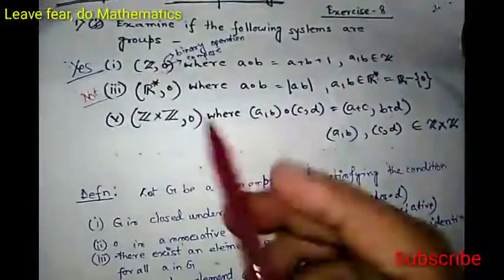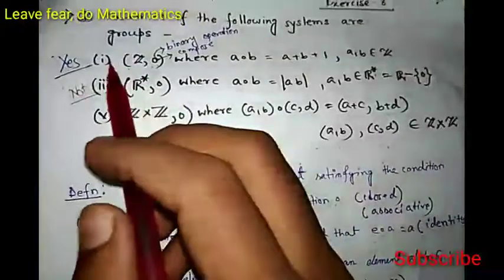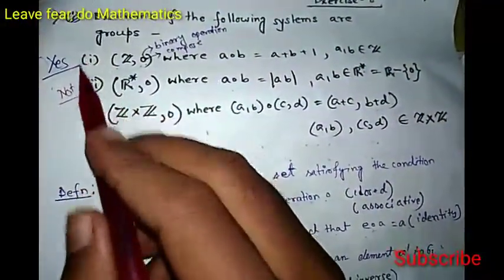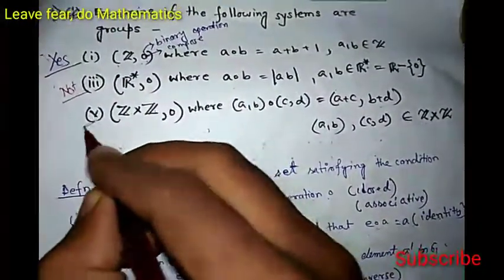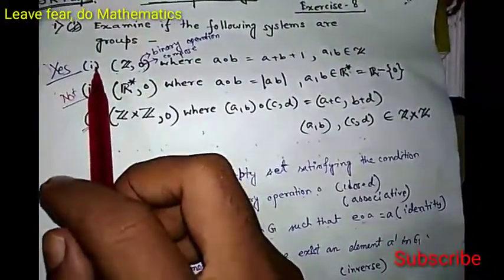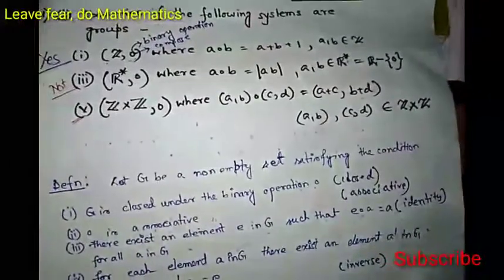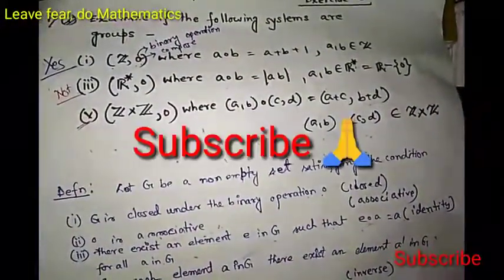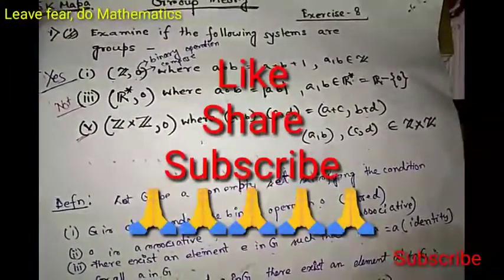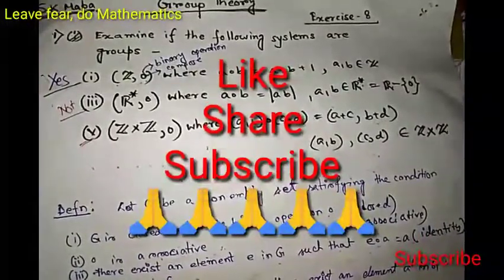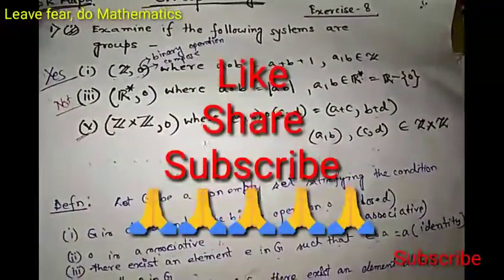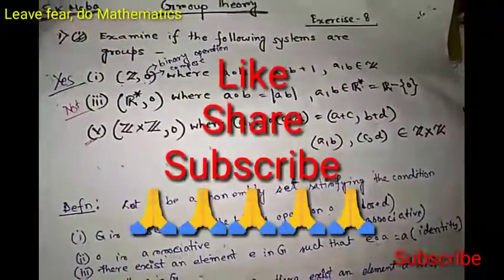I have shown these two problems. Now, imitate the arguments as shown in problem 1 and you will be able to prove that the third system (Z×Z, ∘) is a group. Hope you have enjoyed the video. If you have, please subscribe to the channel and share the video with your friends. If you have any problem or query, please let me know in the comment section. Thank you.